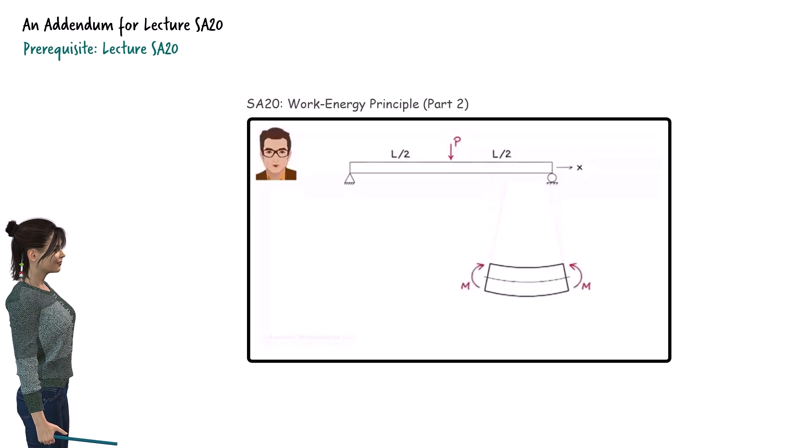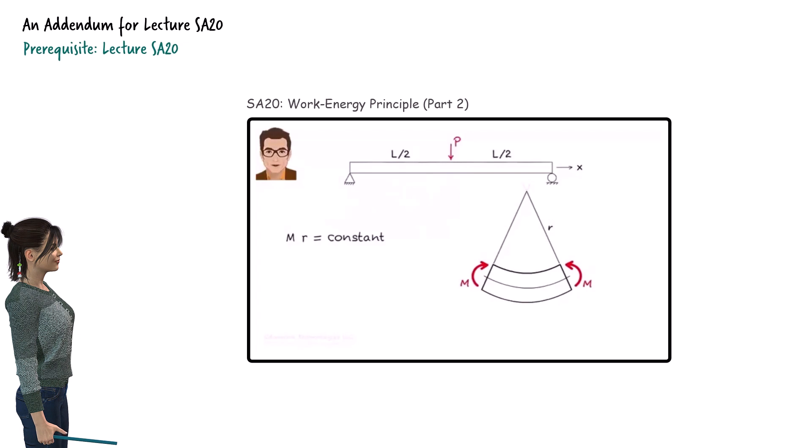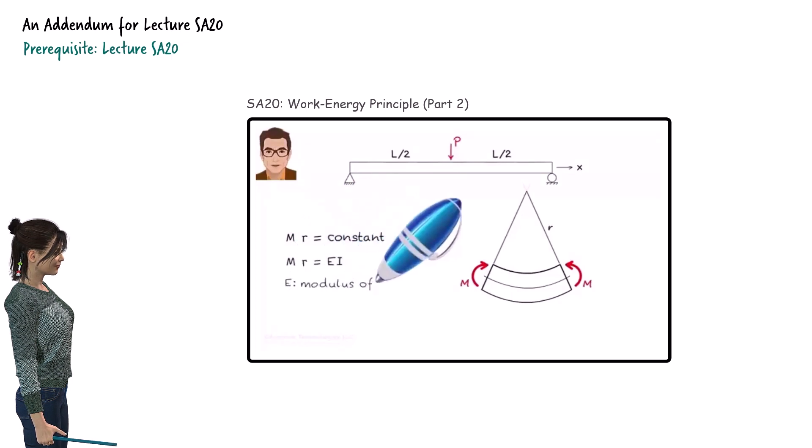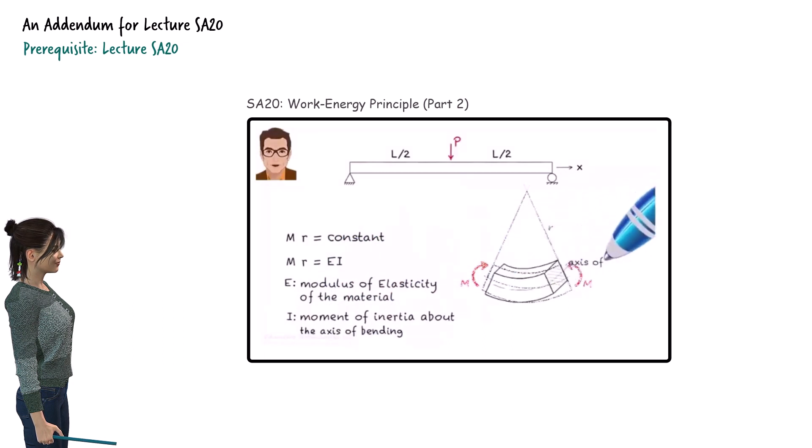Not surprisingly, the product of M and R is constant. For linear elastic material, this constant can be expressed in terms of modulus of elasticity of the material and moment of inertia of the beam segment about the axis of bending. More specifically, we can write M times R equals E times I where E is modulus of elasticity and I is the moment of inertia.